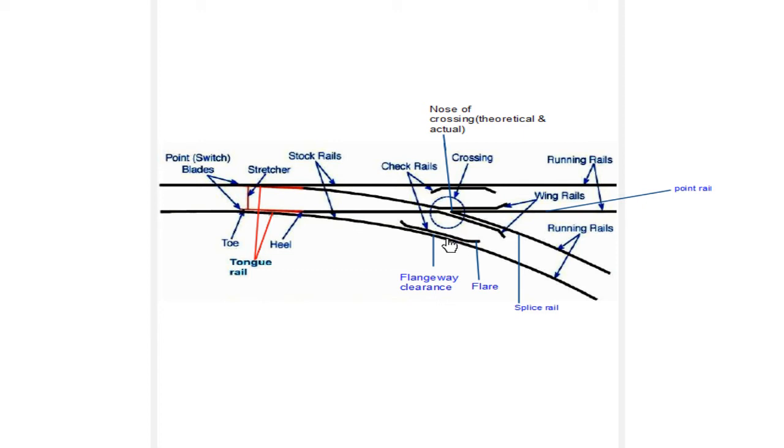Next is flange way clearance. Flange way clearance is the gap provided between the main rail and the check rail or wing rail. You can see small gaps at various locations — between the main track and wing rail, between the branch track and the check rail, and between the splice rail and the wing rail. All those small gaps are known as flange way clearance. The ends of the check rail or wing rail are bent, and that bent portion is known as the flare.